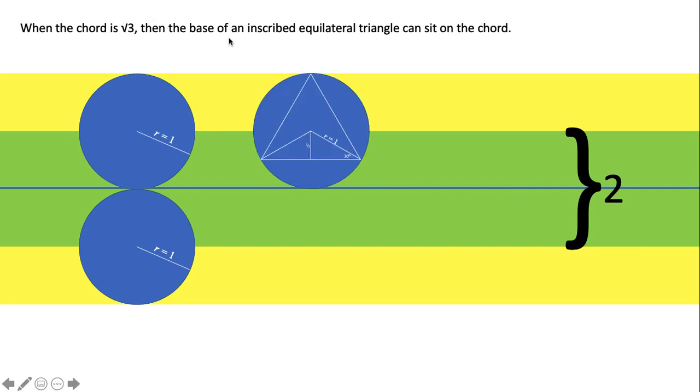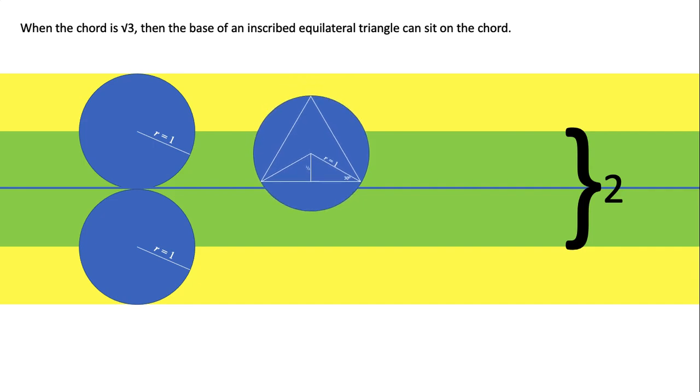So when the chord is root three, then the base of an inscribed triangle can sit on the chord. I've done a slight little animation to show that once it gets down to there, then the base of the triangle is sitting on the chord.